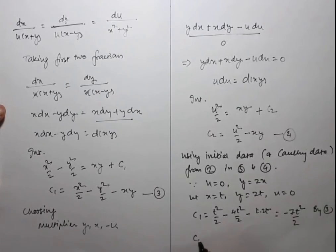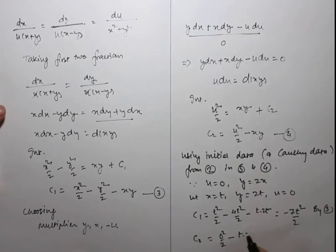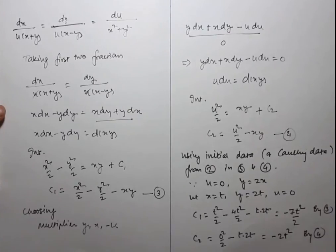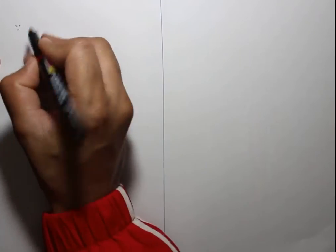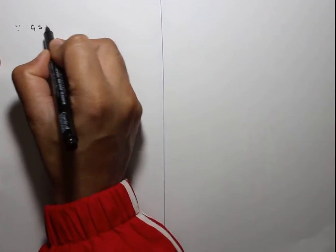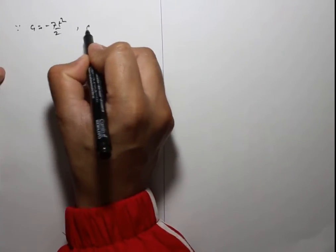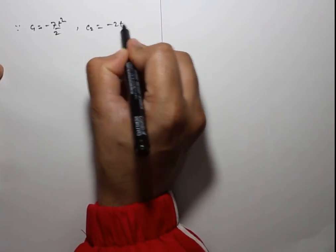And c₂ = 0²/2 - t(2t) = -2t². Now c₁ = -7t²/2 and c₂ = -2t², so c₂ = -7t²/... — establishing the relation between c₁ and c₂.